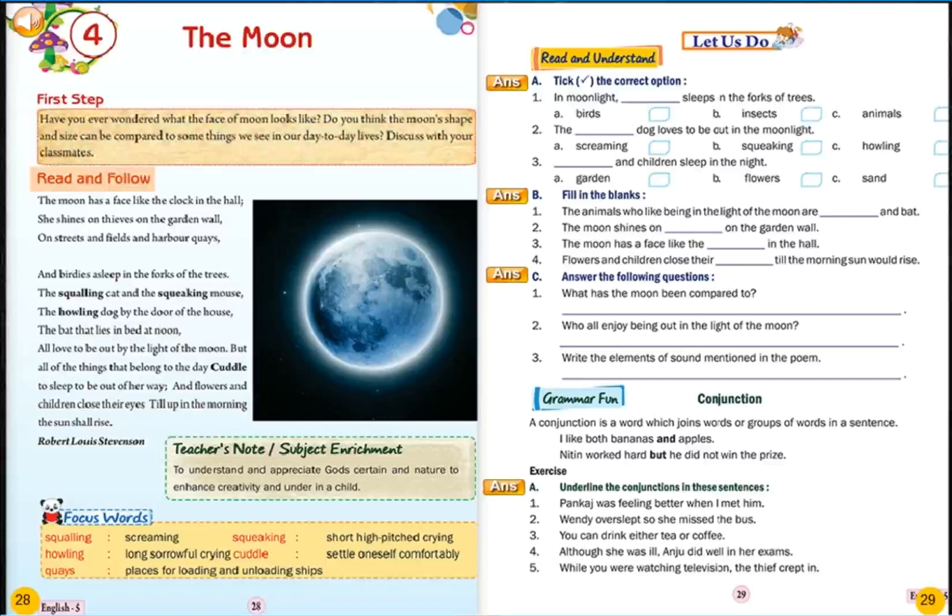Read and follow. The moon has a face like the clock in the hall. She shines on the thieves on the garden wall, on streets and fields and harbour quays, and birdies asleep in the forks of the trees.